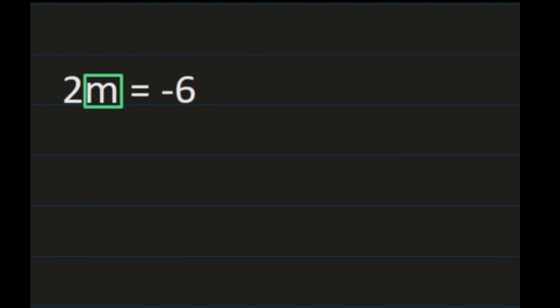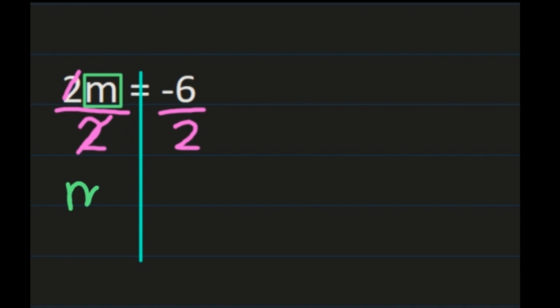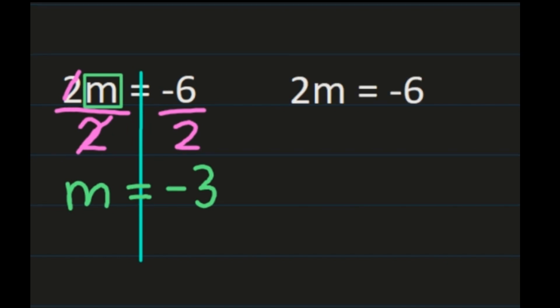For our next example, we have 2m equals negative 6 — getting into examples with multiplying and dividing. Box the variable m and add the line through the equal sign. We have 2 times m, so the inverse is to divide. We divide both sides by 2. On the left, the 2s simplify to 1, leaving just m. On the right, a negative divided by a positive is a negative, and 6 divided by 2 is 3. So m equals negative 3.